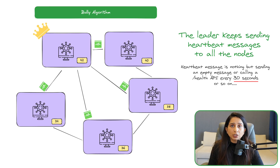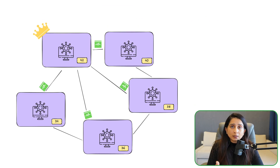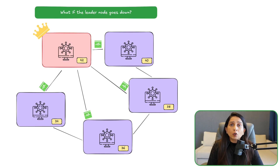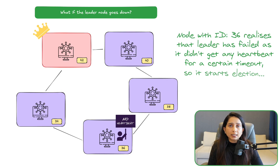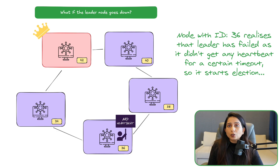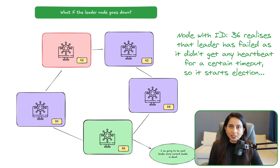As long as the system is functioning well and the leader is sending heartbeat messages, everything is fine. But let's say the leader goes down for some reason or there is a fault in the leader node and it stops sending heartbeat messages. All the other nodes expecting heartbeats will start noticing they are no longer receiving them. The first node to realize this will start an election, declaring that the system needs a new leader.